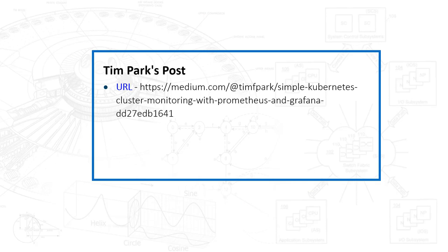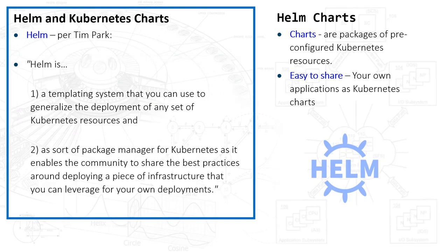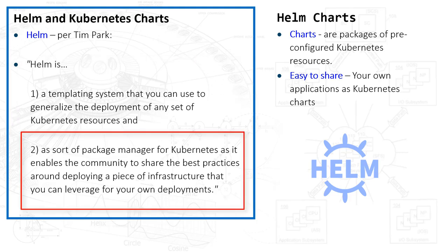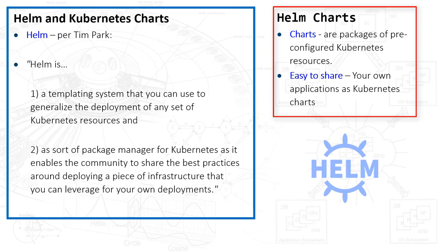Helm is basically a templating system that you can use to generalize the deployment of any set of Kubernetes resources. It can also be thought of as a package manager — it enables a community to share best practices. In our case, it's going to be about Prometheus and Grafana. We're going to deploy that infrastructure using Helm charts. A Helm chart is pre-configured Kubernetes resources — easy to use, easy to implement. I'll show you how to download all the Helm charts and then make modifications for Prometheus and Grafana running on Kubernetes.